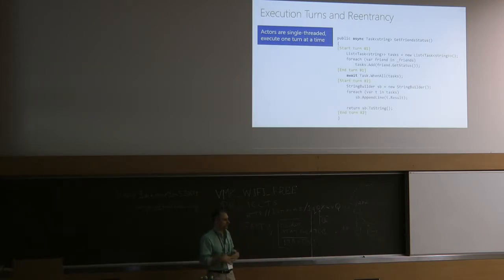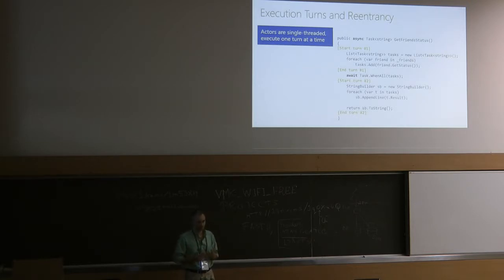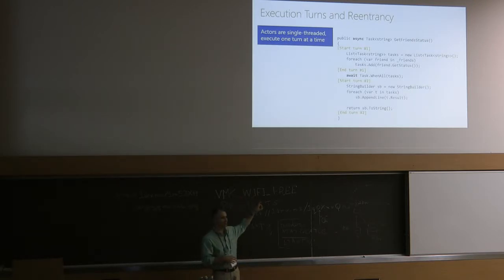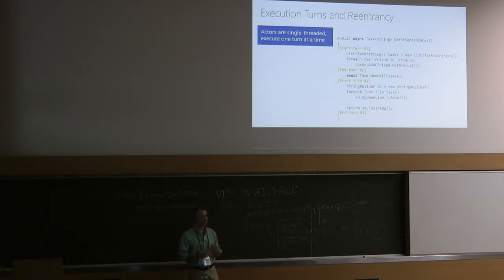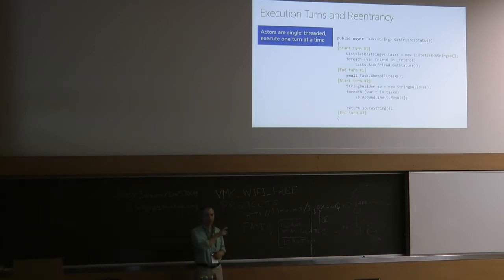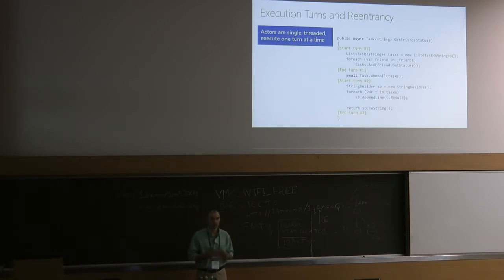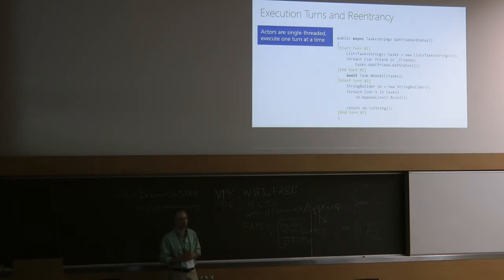Reentrant execution is more responsive for callers but much harder to reason about. When you start executing the second turn in reentrant mode, you can't assume the grain state is where you left it — a hundred other calls may have run and your friend list may have completely changed. That's why we made non-reentrant the default, so these error-prone situations are less likely. But if you know what you're doing, you can turn it on.